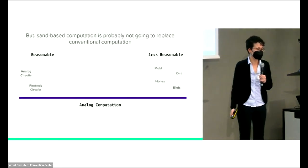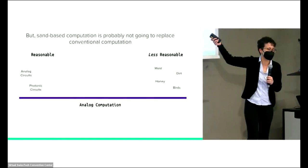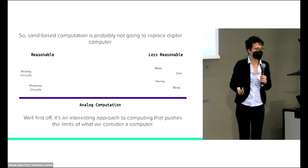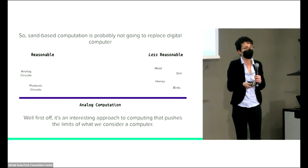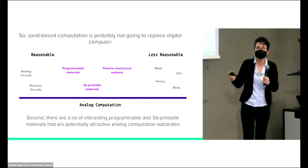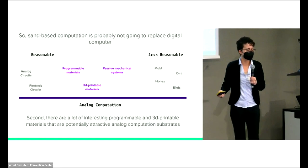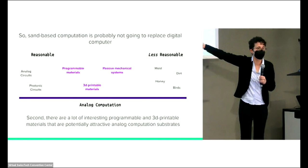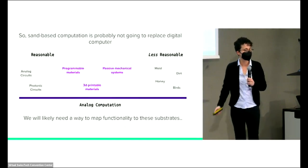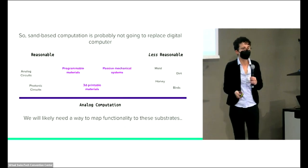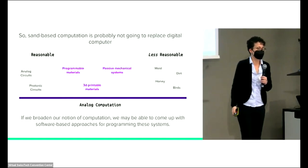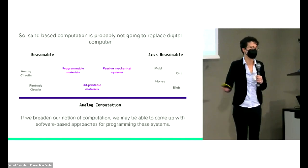You might ask me why study these less reasonable forms of analog computation? Well, there's a few reasons. First, it's an interesting approach to computing that pushes the limits of what we consider a computer. Second, there's a lot of interesting programmable and 3D printable materials that are potentially attractive for doing analog computation that have this feature where they're continuous in space and continuous in time. By studying how people use these sorts of physical substrates to do computation in other domains, we might get an idea of what the programming interfaces and configuration interfaces for this hardware should look like. We should broaden our notion of computation because it'll enable us to develop more software based approaches for these systems.